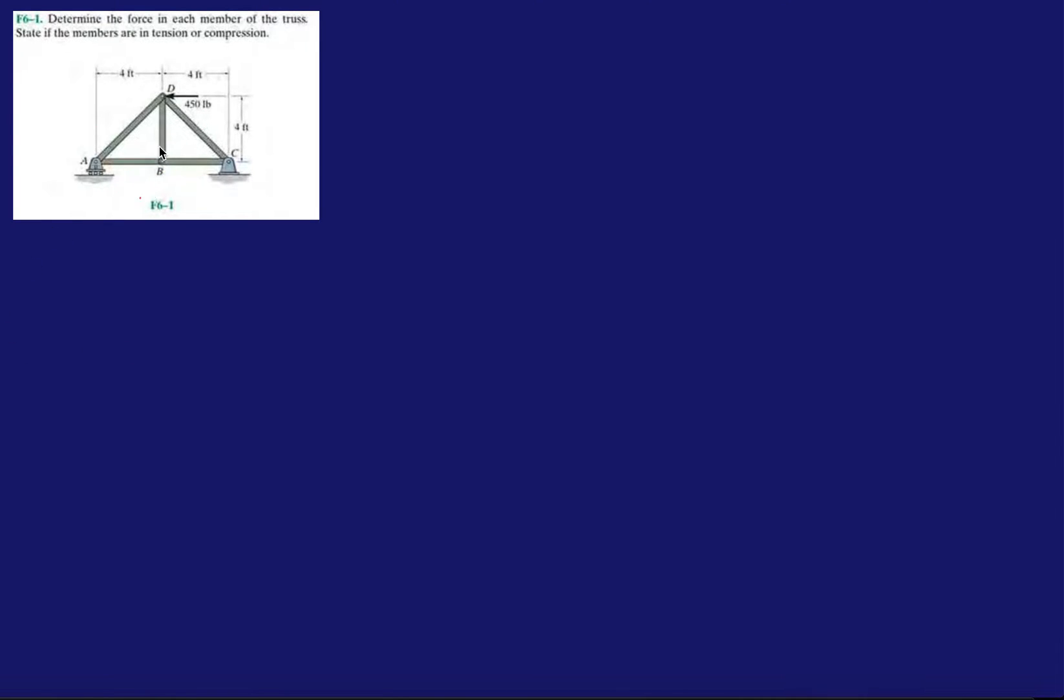So to do these kind of problems, the first thing you want to do is find the reactions. Most of the time, like 90% of the time you always want to find the reactions first. So at A, you know you have reaction force from the roller, let's call it AY. And then at C, we have CY and CX. And then we're going to just analyze the structure as a whole. So first off, let's do F of X.